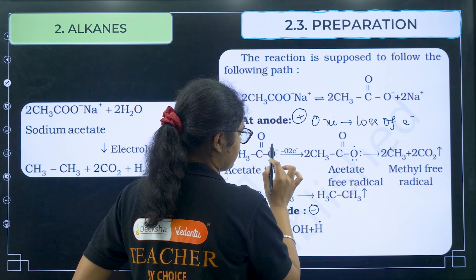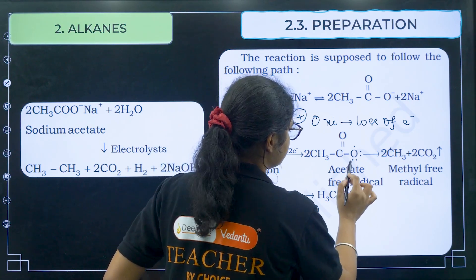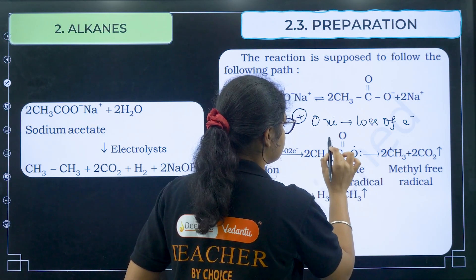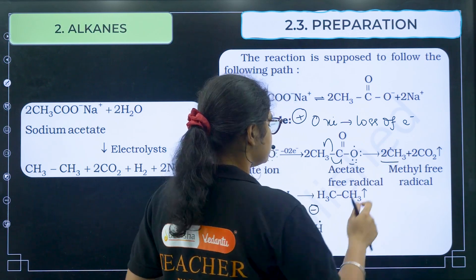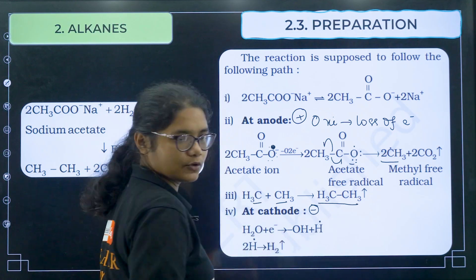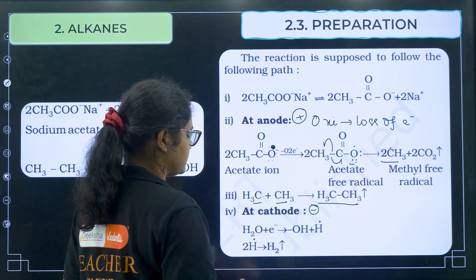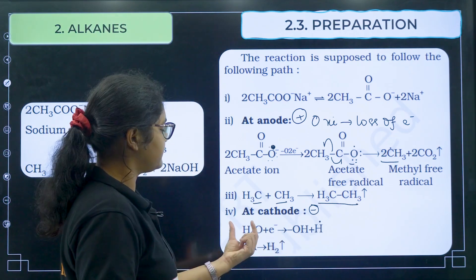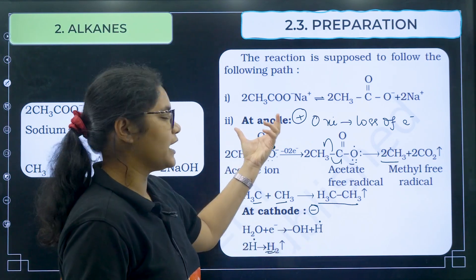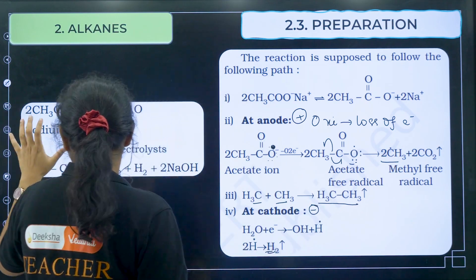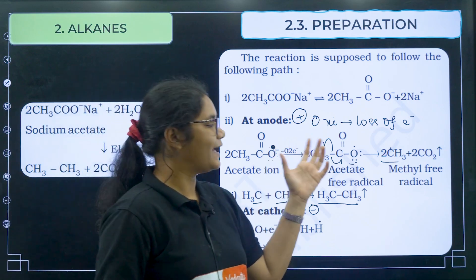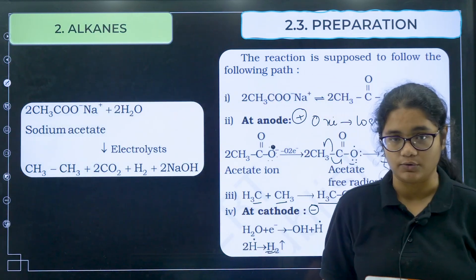In Kolbe's electrolytic method, at the anode — which is positively charged — oxidation occurs (loss of electrons). The CH₃COO⁻ ion loses two electrons, the C–O bond breaks generating a free radical, and two such free radicals combine to give ethane. At the cathode, water is attracted and H₂ gas is produced. So remember: alkanes are produced at the anode electrode.